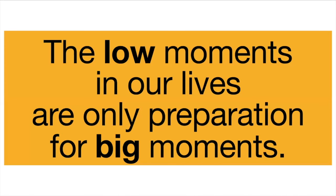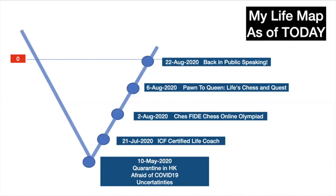For this speech, I referred again to my life map and this is what it looks like now. May 10, we already covered that. On July 21, I got my certification as a life coach. On August 2, I joined Chess Online Olympiad. So it's an international event. I represented Bermuda.